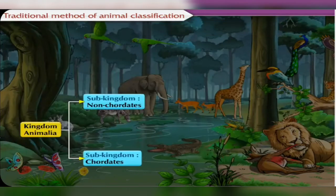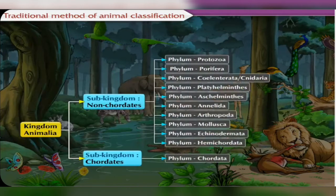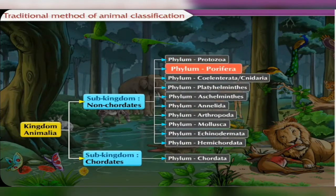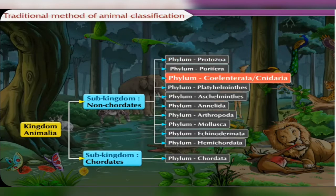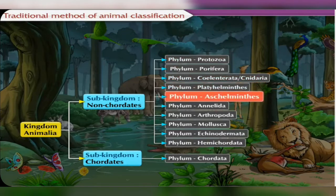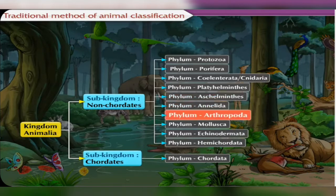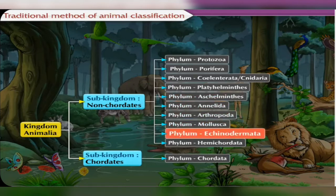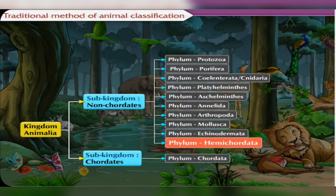Non-chordates are divided into ten phyla: Protozoa, Porifera, Coelenterata, Cnidaria, Platyhelminthes, Aschelminthes, Annelida, Arthropoda, Mollusca, Echinodermata, and Hemichordata.